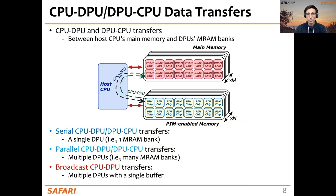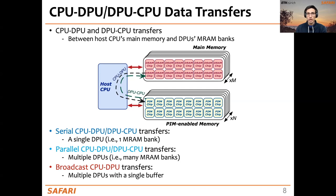We also discussed how to perform data movement between main memory and PIM-enabled memory — the CPU-to-DPU and DPU-to-CPU data transfers. There are three different ways: serial transfers targeting a single DPU or MRAM bank; parallel CPU-DPU or DPU-CPU transfers targeting multiple DPUs or MRAM banks; and broadcast CPU-DPU transfers, where a single buffer is transferred to all targeted DPUs.